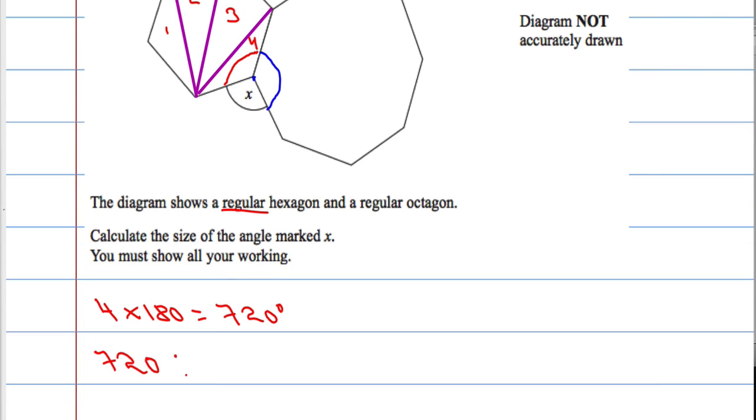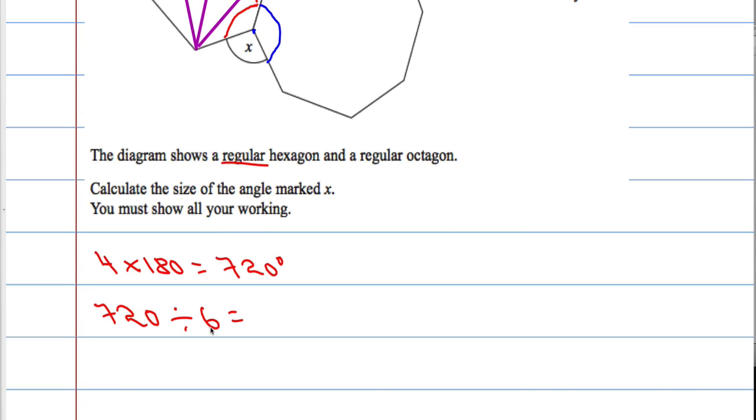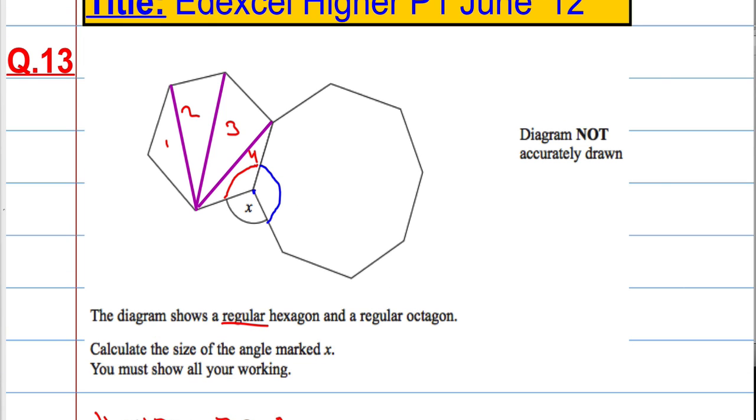So if I do 720 divided by 6, that will tell me the size of the red angle, and in fact every other angle in the shape. So 6 into 7 goes once, carry one over 2 and 0. So 120 degrees is the red angle.